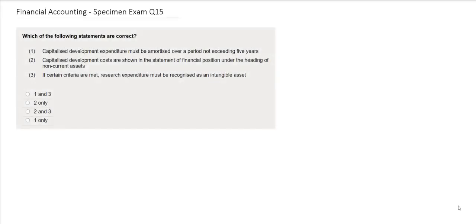In this question you are being asked which of the following statements are correct. The first statement is that capitalised development expenditure must be amortised over a period not exceeding 5 years. The second statement says that capital development costs are shown in the statement of financial position under the heading of non-current assets.